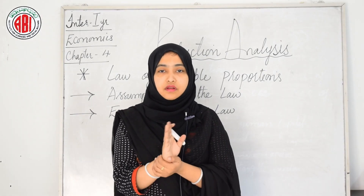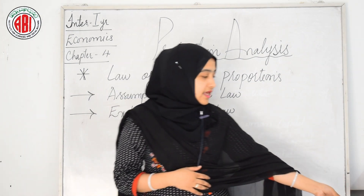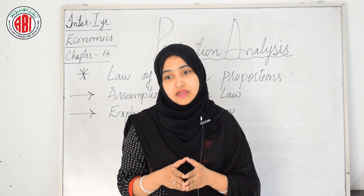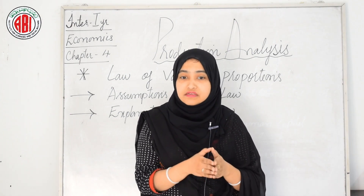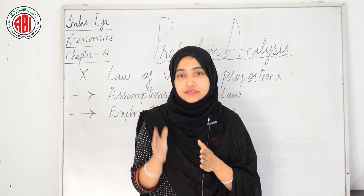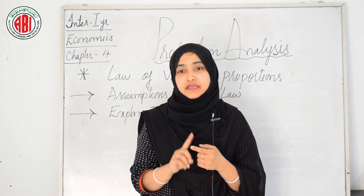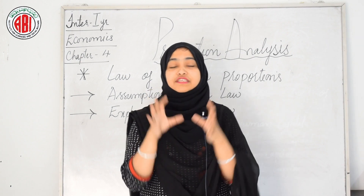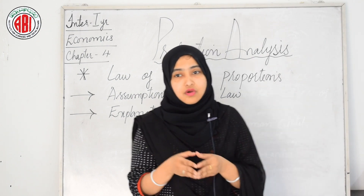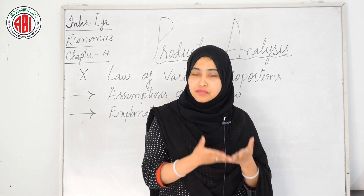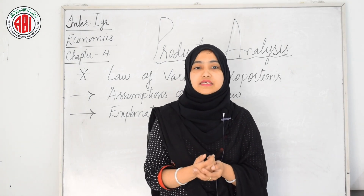The law can be explained with a hypothetical illustration. Suppose a farmer has 10 acres of land to cultivate. Land and capital are assumed as fixed factors of production, and labor is the variable factor. Land is not shown in the table as it is fixed; any change in the number of laborers will change output. The changes in total product, average product, and marginal product as a result of changes in labor are shown in the table.